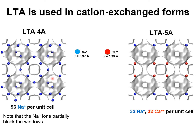You note that the sodium cations occupy positions that partially block the windows separating the cages. This partial blocking of the windows is an essential characteristic of 4A zeolites. LTA-5A zeolites, on the other hand, have 32 sodium cations and 32 calcium cations per unit cell. The sodium cations are shown by blue spheres and the calcium cations by red spheres. These cations do not occupy sites near the windows, and there is no obstruction of inter-cage hopping of gas molecules through the 4-angstrom windows.